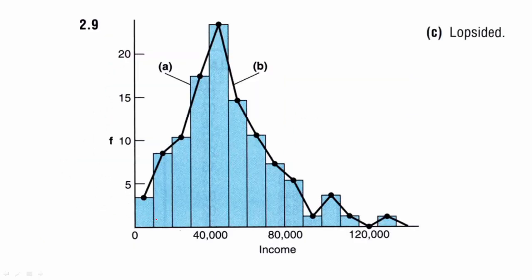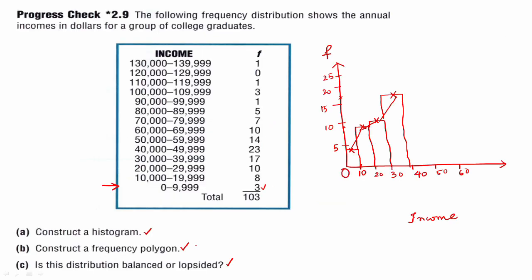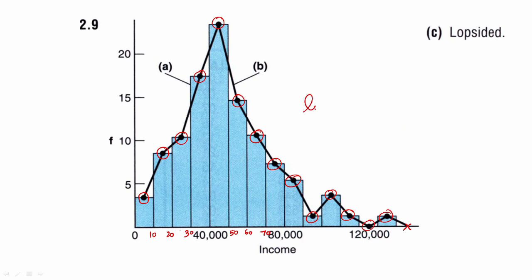So we can see the answer: 10, 20,000, 30,000, 40, 50, 60, 70 — you can see the histogram. Next is the frequency polygon. We connect the midpoints. So the histogram is a frequency polygon. The last step is the distribution balance. If you are balanced, the curve is a normal distribution. The frequency polygon is a normal distribution — this is not a normal distribution.